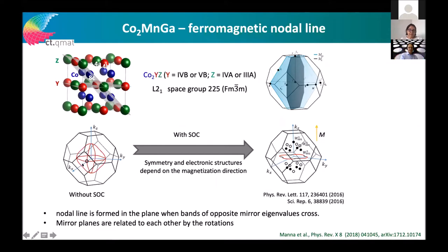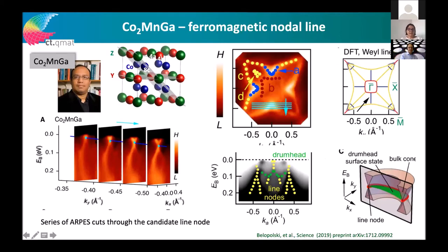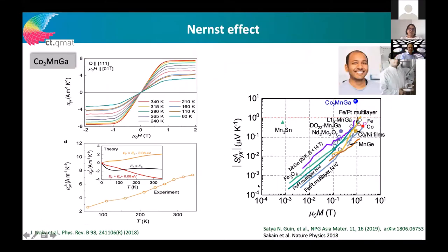Co₂MnGa has ferromagnetic nodal lines when unmagnetized — it is soft magnetic with a cubic structure where x, y, z are equivalent. Applying a magnetic field in a certain direction converts those nodal lines into Weyl points. To verify the calculated electronic structure, we performed ARPES together with Hassan's group, nicely showing the nodal line in Co₂MnGa and the photo emission data around the Fermi energy. The prediction also included an unusual surface state — the drumhead state — which was confirmed by ARPES.